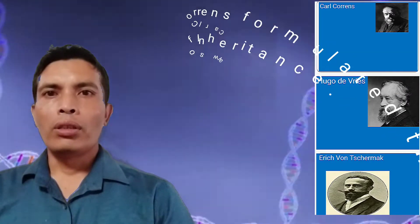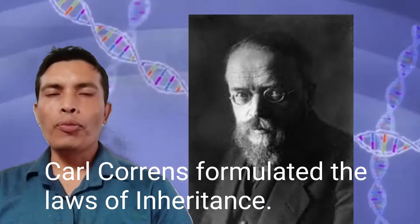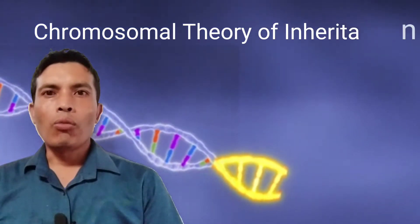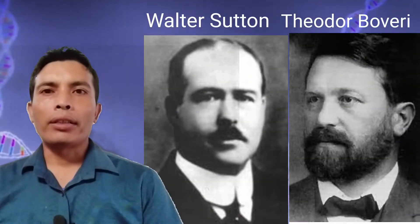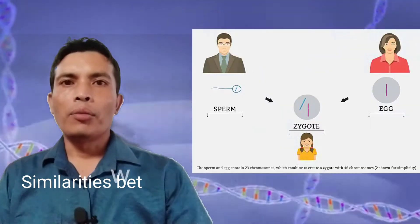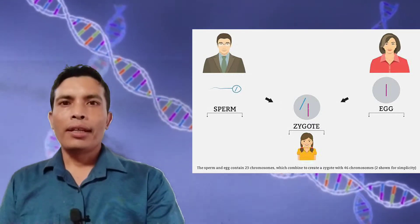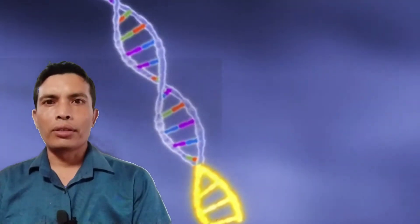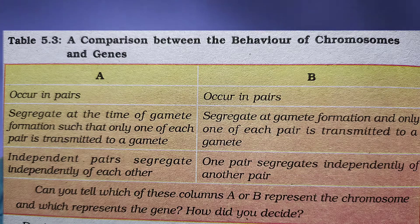Among these three scientists, Carl Correns was the one who formulated the laws of inheritance. Walter Sutton and Theodor Boveri independently proposed the chromosomal theory of inheritance. The two workers found a close similarity between the transmission of hereditary traits and the behavior of chromosomes while passing from one generation to the next. Through the agency of gametes, Sutton united the knowledge of chromosomal segregation with Mendelian principles and called it the chromosomal theory of inheritance.